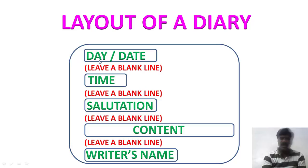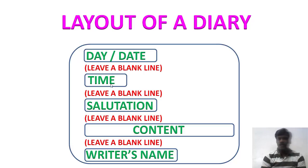We have to begin with day and date. You can write both on the same line, beginning with day and then date. Then leave a blank line. Secondly, we have time. A diary entry is generally made while going to bed, so you must enter a night time like 9 PM or 9:30 PM.